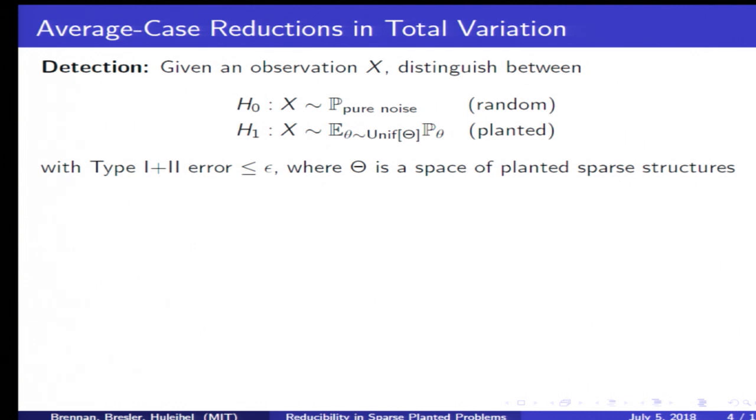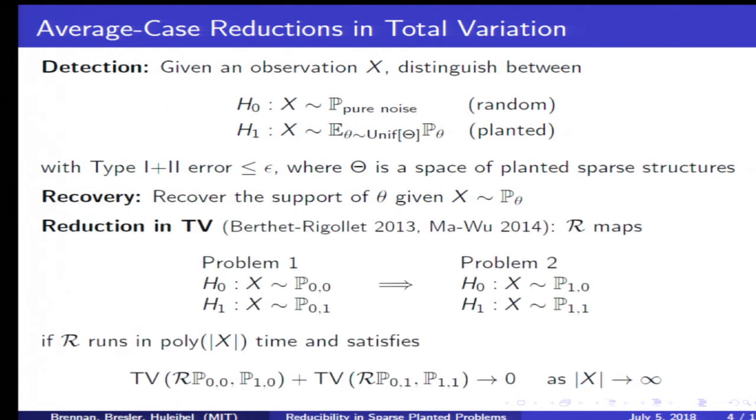The first thing to answer is what is the right notion of an average case reduction. The types of problems we'll be considering are detection and recovery problems. In detection problems, you're given an observation X, and the task is to distinguish between two hypotheses. First, that either it's sampled from some pure noise model or that it comes from a model with some planted sparse structure, which is typically drawn uniformly at random from some natural set. We'll also consider recovery problems, which is to recover the support of the planted sparse structure given an observation from the corresponding model. But for the purposes of this talk, I'm not going to consider recovery.